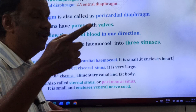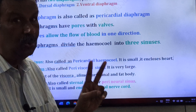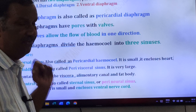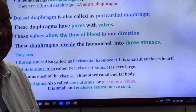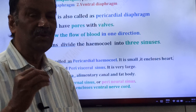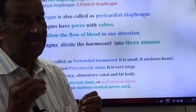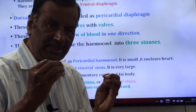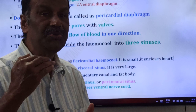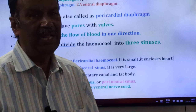To summarize: due to the presence of two diaphragms — the dorsal diaphragm and the ventral diaphragm — the hemocele of the cockroach is divided into three sinuses: dorsal sinus, middle sinus, and ventral sinus.